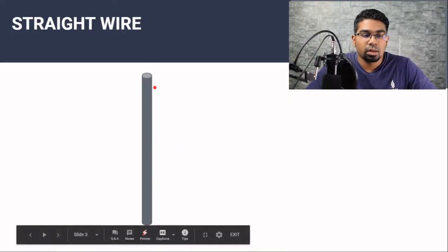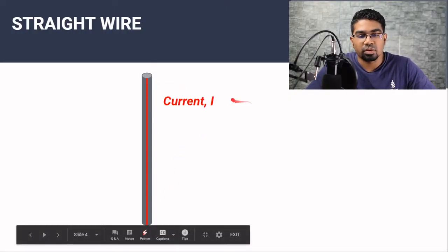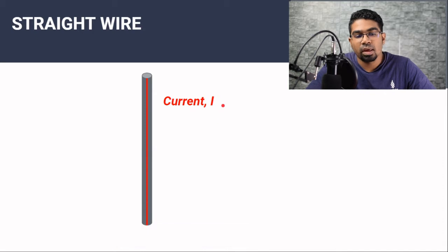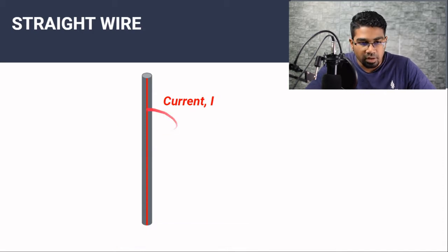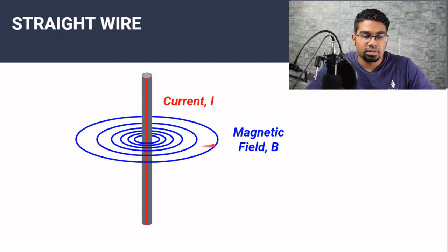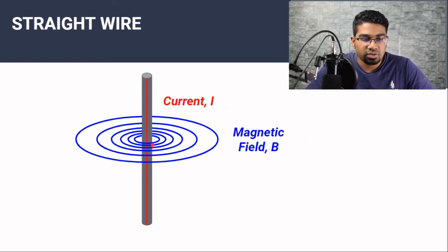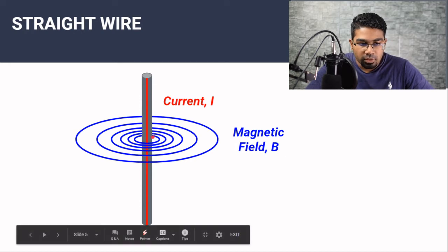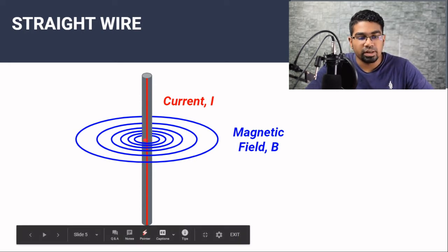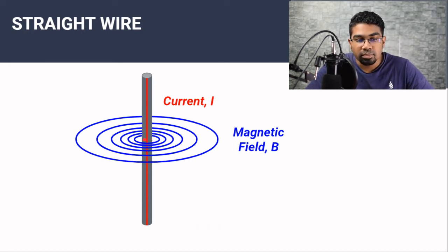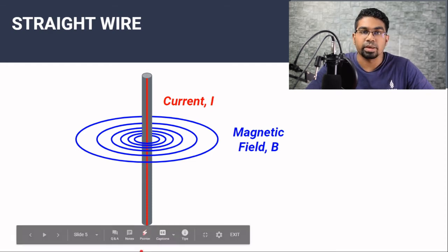This is a straight wire. When the current passes through the wire — the symbol for current is I — a magnetic field is generated around this wire. This is how the magnetic field would look like. The magnetic field is present throughout the wire; we are only looking at the magnetic field at a single point here. But in actual fact, the magnetic field exists all throughout the wire.